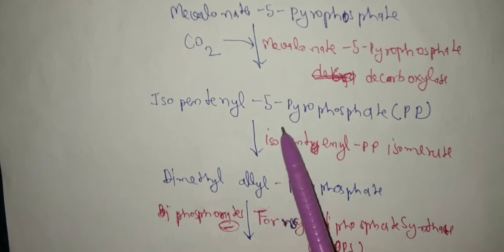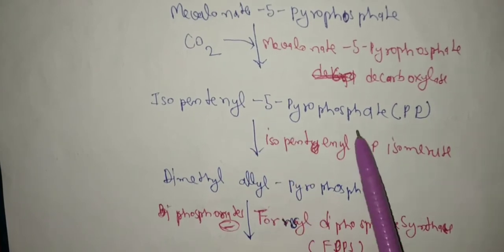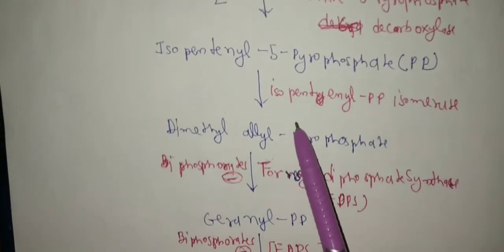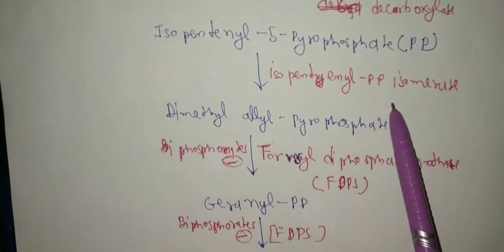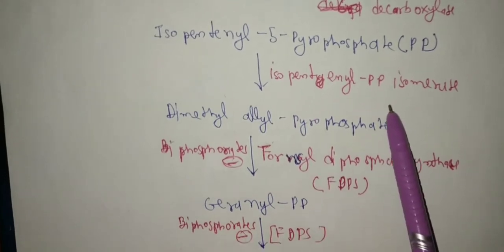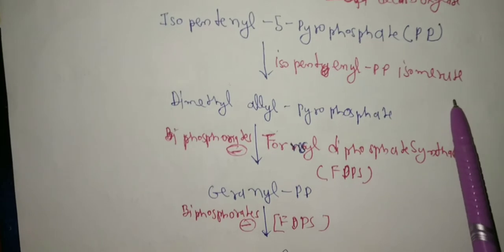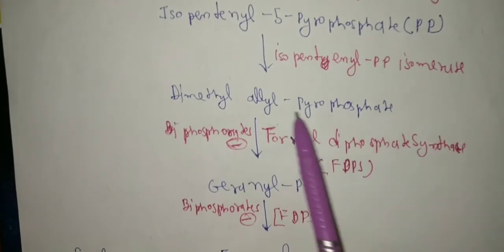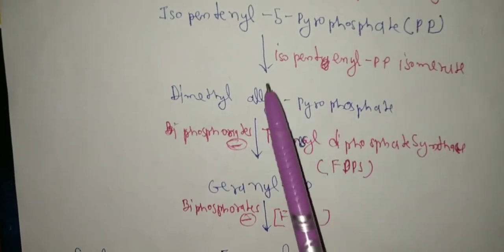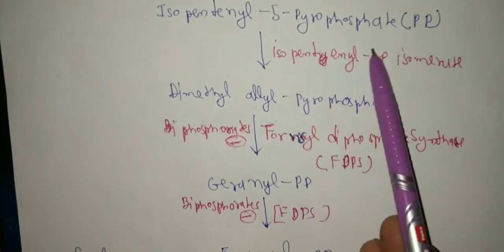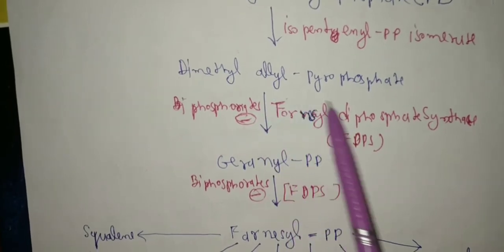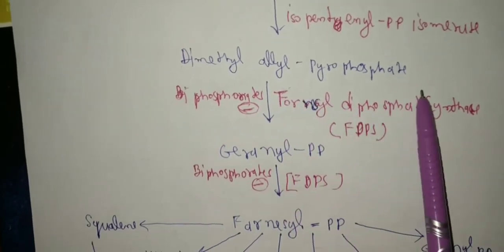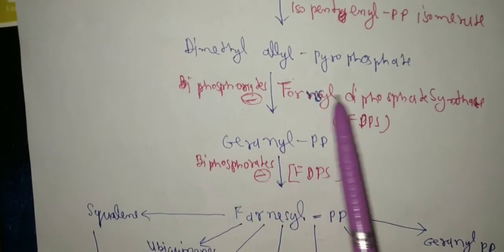The product is converted into isopentenyl pyrophosphate. Isopentenyl pyrophosphate isomerase enzyme then converts isopentenyl pyrophosphate units to dimethylallyl pyrophosphate.